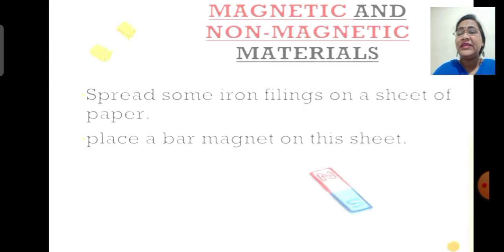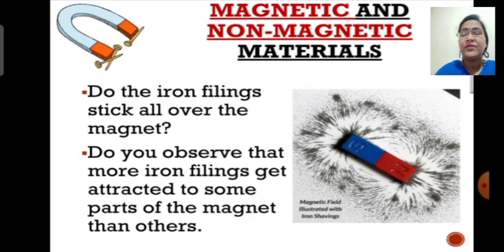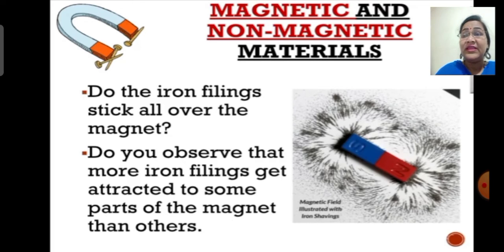Let us learn that by understanding another activity. Take a plain sheet of paper and spread it on an even surface. Then spread some iron fillings on the sheet. Now try to bring a bar magnet onto the paper and place it in the middle. Do all iron fillings get stuck to the magnet all over its surface? If you observe the image, can you find more iron fillings getting attracted to only some parts of the bar magnet? They did not stick evenly all over the magnet.